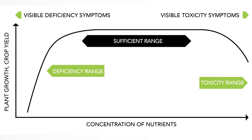So three categories: sufficient, deficient when we're not providing enough, or toxic. And we see all three states pretty regularly. So we hope we can maintain that sufficient level.